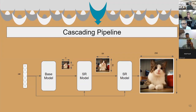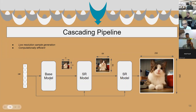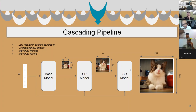The natural question is: why do cascading when we can have all these in a single step? Most of the sample generation is done in the base model at low resolution, which is computationally efficient and generates a better sample. Another thing is that we can train and tune the models of the pipeline individually, which helps in generating a better sample at high resolution.